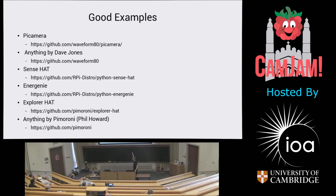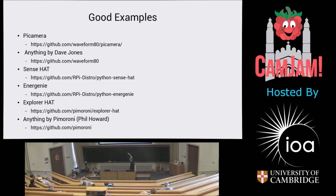Good examples of libraries: picamera is fantastic, and anything by Dave Jones — github.com/waveform80. All of his stuff is where I go if I need inspiration — how would Dave do this? The Sense Hat was done by Dave Honus at Raspberry Pi Foundation with a bit of help from me. Energenie: the code was done by Energenie, cleaned up by Amy Mather, packaged up by me. The Explorer HAT is a really good library as well, based on the Pibrella library. Anything by Pimoroni — Phil Howard is their software person who's really good at this stuff.